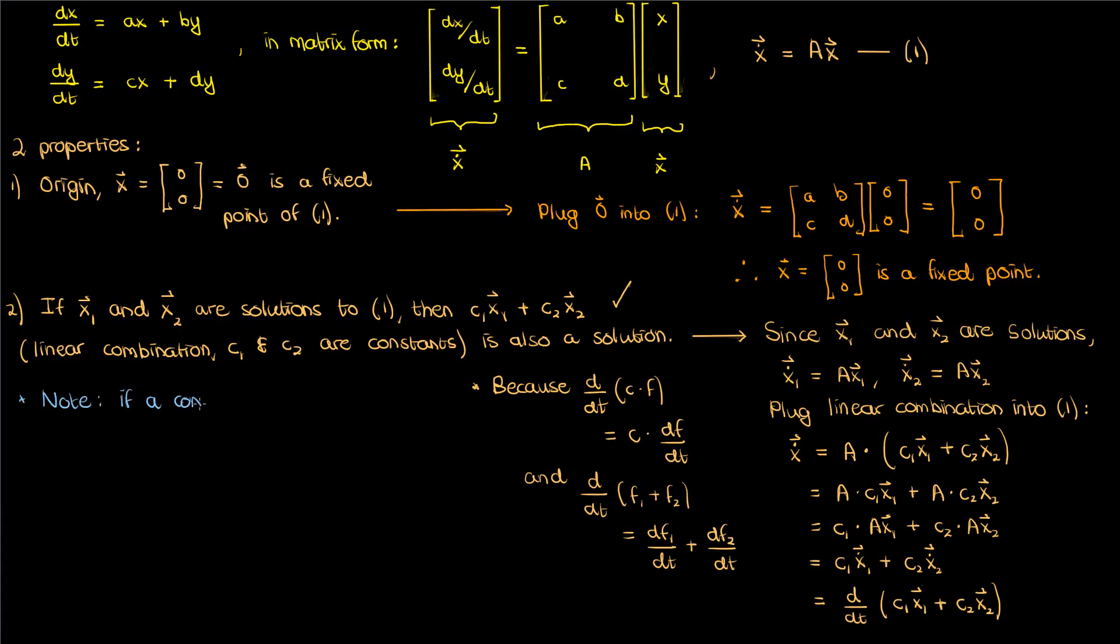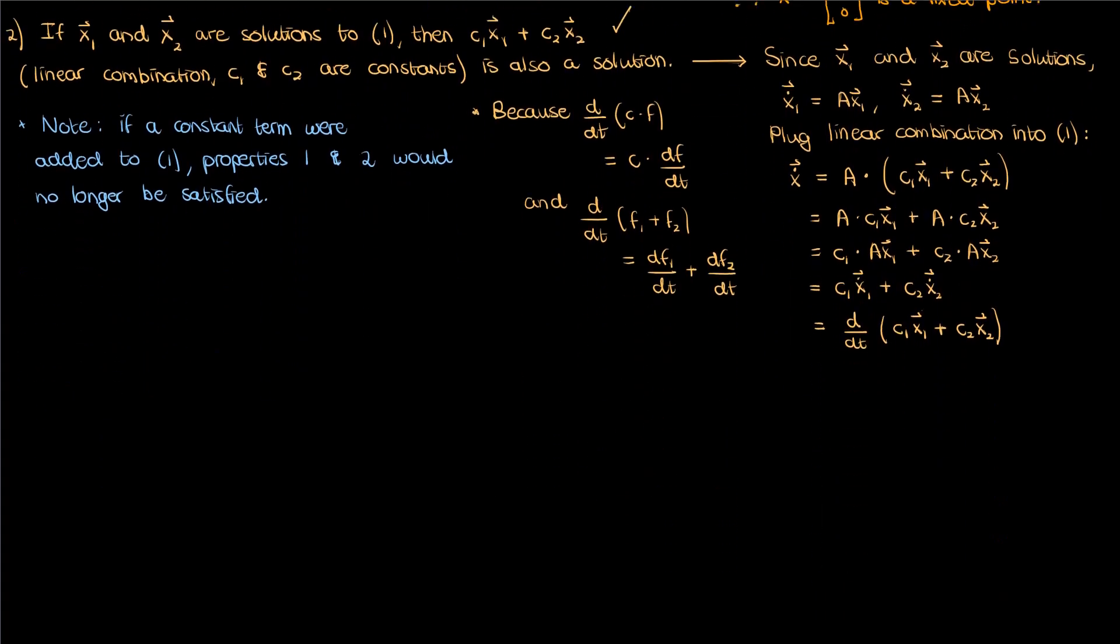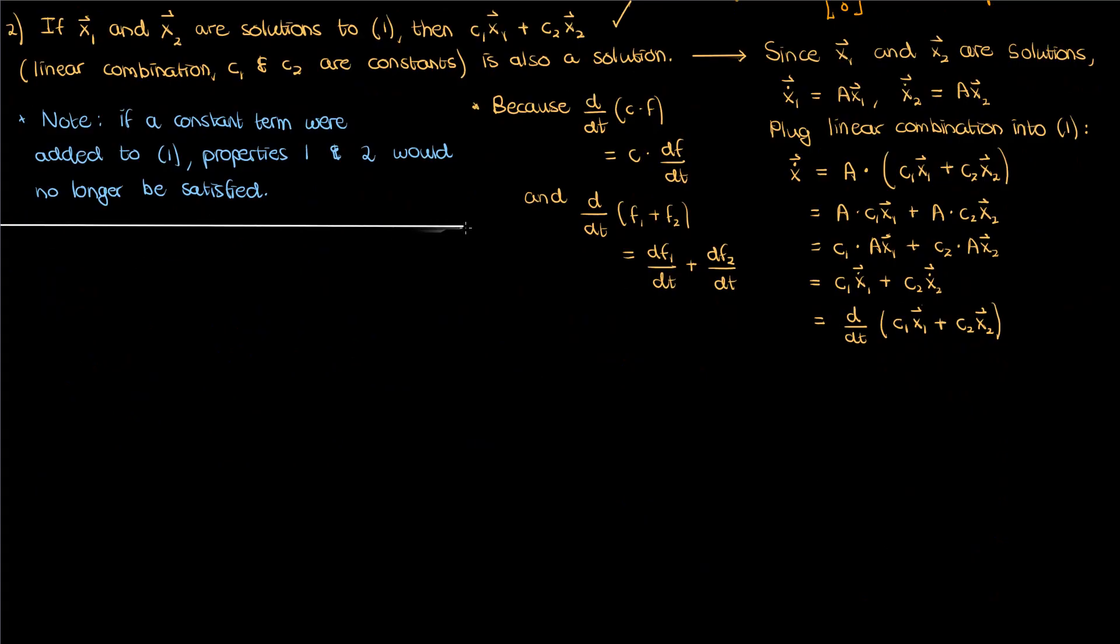You can additionally verify that if I added a constant term to my differential equations, that both properties 1 and 2 would no longer be satisfied. So our dynamical system would no longer be linear. So we cannot even allow constant terms to enter our 2D linear dynamical system because then it would no longer follow the usual properties of a linear system.